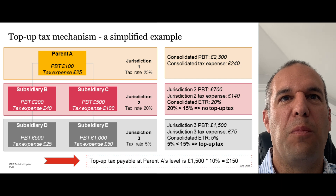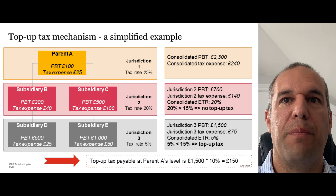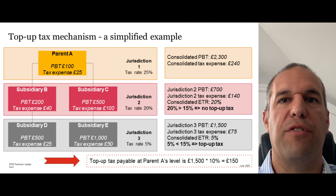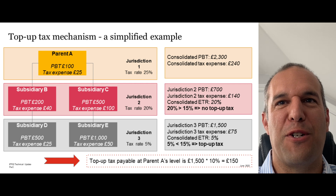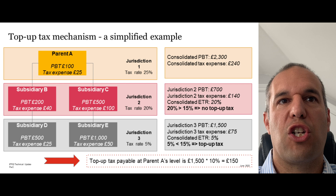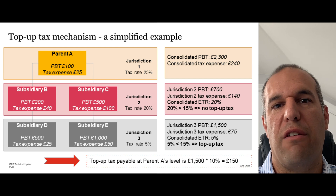Let's look at a simple example. We have a parent with a consolidated profit before tax of £2,300 and a consolidated tax expense of £240. The Pillar 2 rules are initially keyed off your IFRS consolidated earnings. In jurisdiction one — the parent's jurisdiction — profit before tax is £100, tax expense is £25, effective tax rate 25%, no problem. In jurisdiction two, combined profit before tax is £700, combined tax expense is £140, giving an effective tax rate of 20%. Since 20% exceeds the 15% minimum, there is no problem in jurisdiction two.